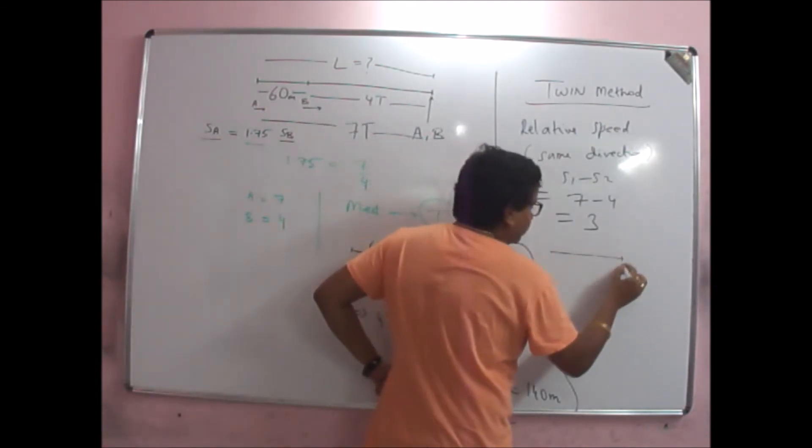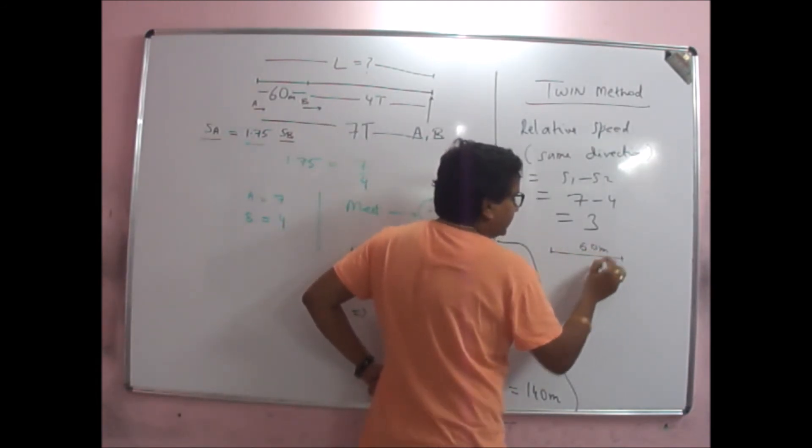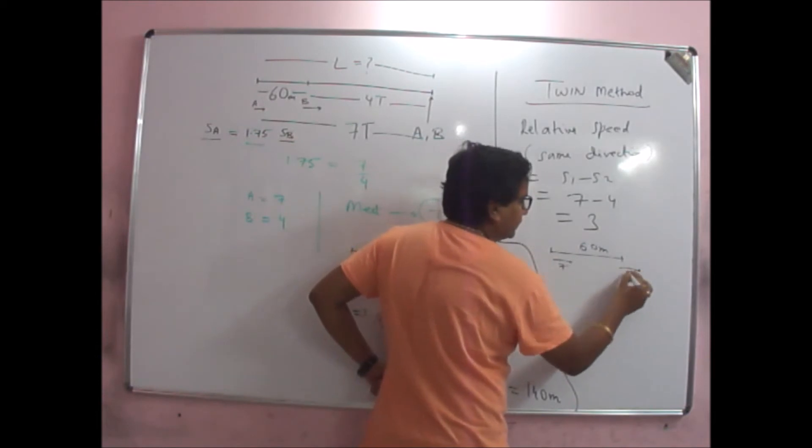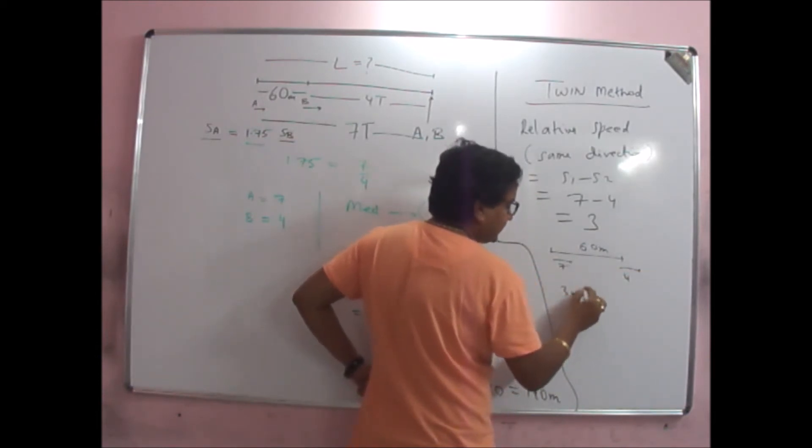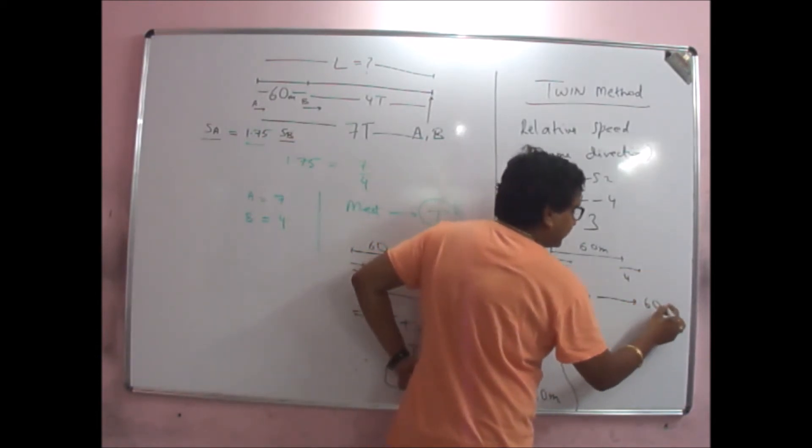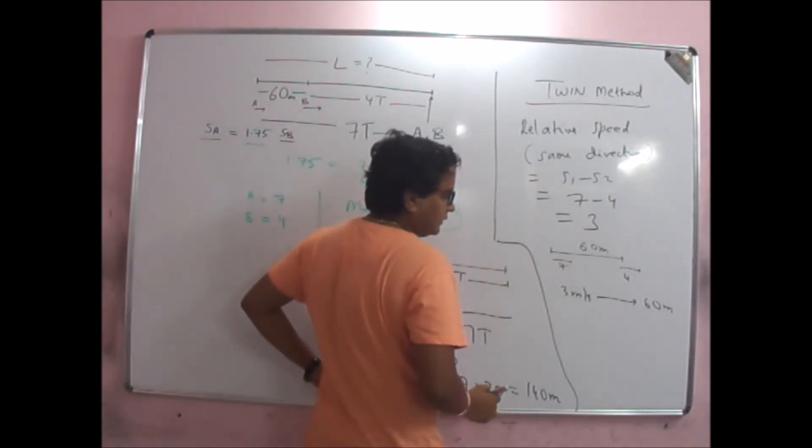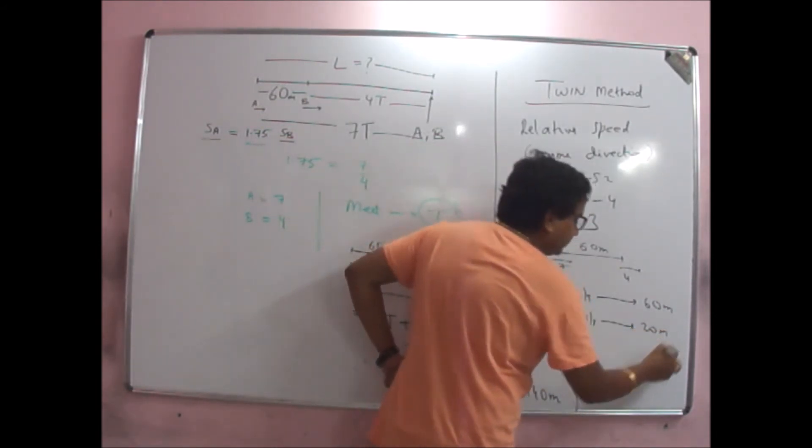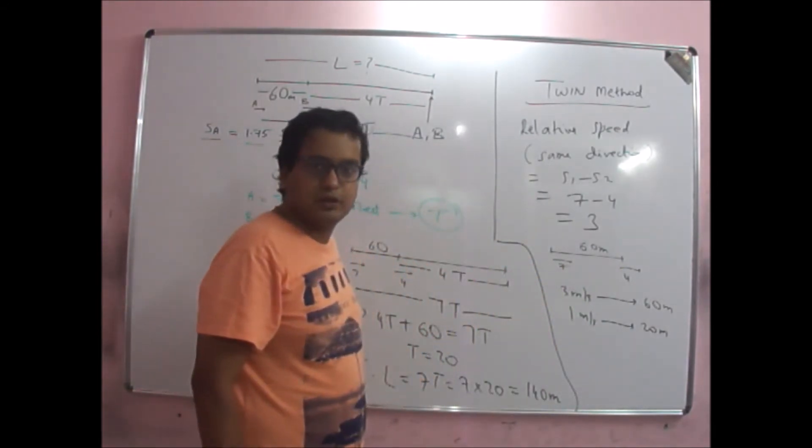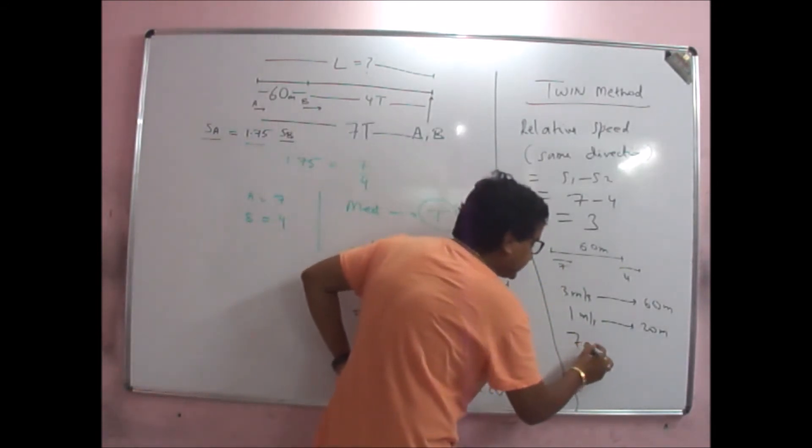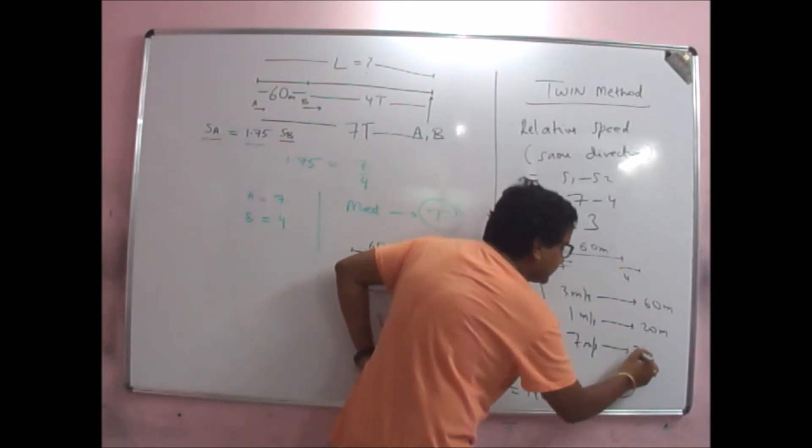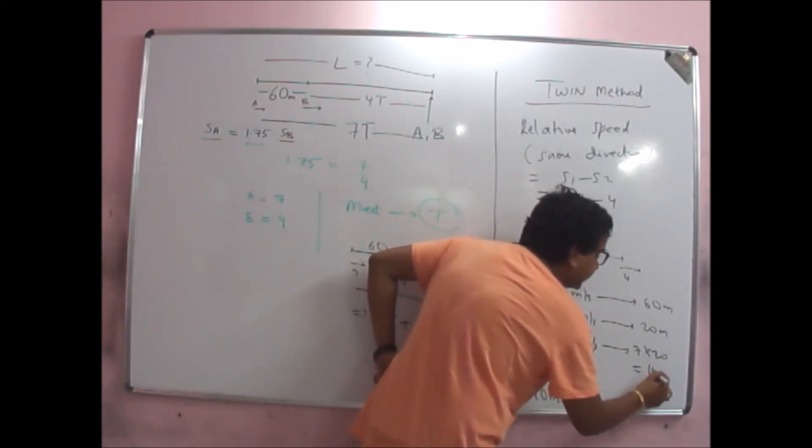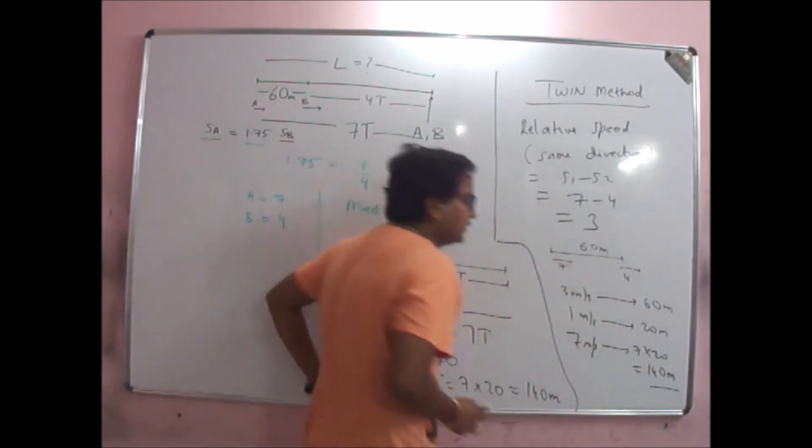So, 60 meter with the difference of 3 meters per second. When the gap finishes, it means with 1 meter per second difference, how much gap will be covered? 20 times. So, with 7 meter per second, how much? 7 into 20, which is 140 meters.